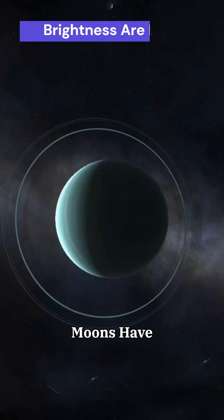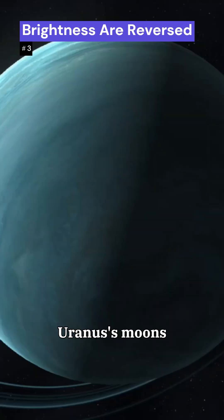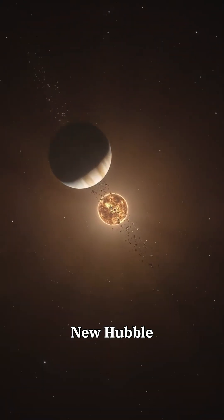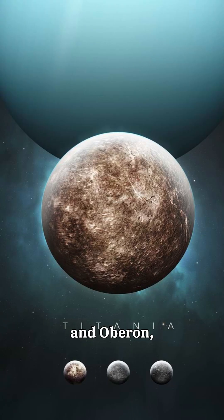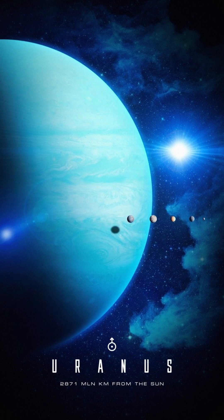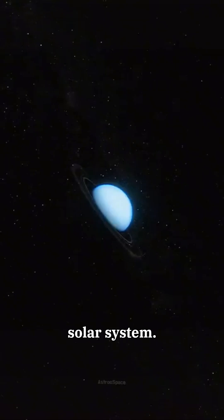Number 3. Moons have brightness reversed. Uranus's moons are breaking the rules of light and shadow. New Hubble images showed that the trailing sides of some moons, like Titania and Oberon, are brighter than their leading sides. That's the opposite of what happens in most of the solar system.